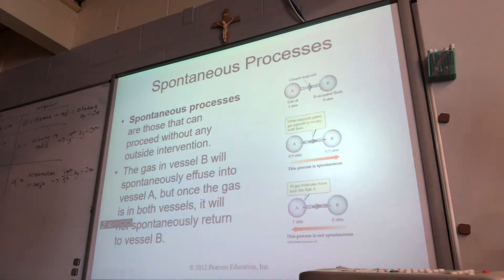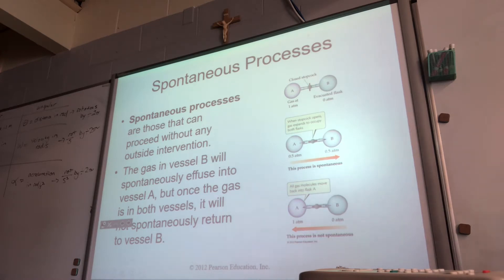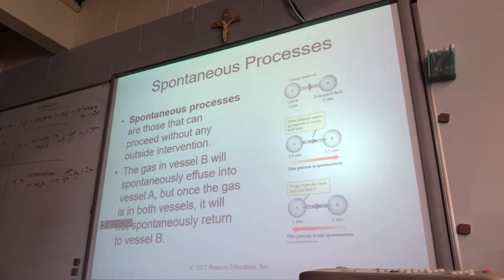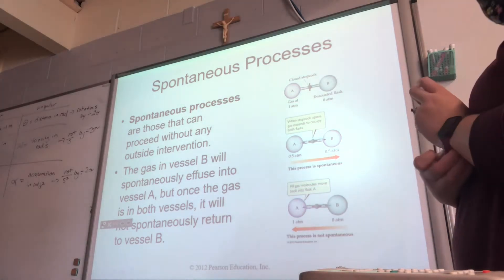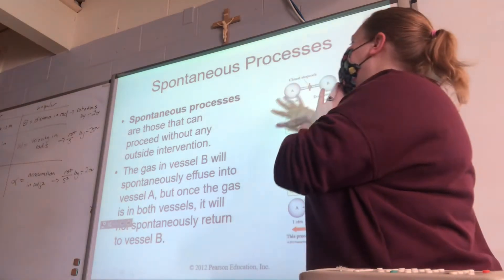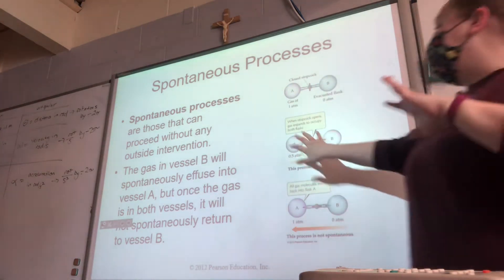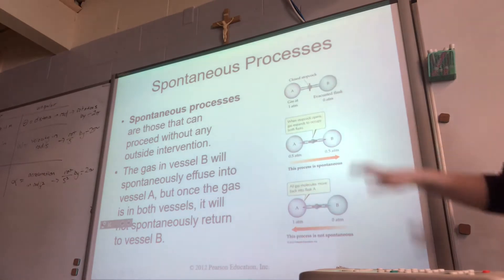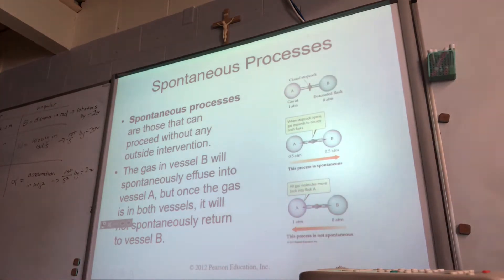From there, we want to talk about spontaneous processes—ones that don't need us to do anything in order to get them to happen. We don't have to add heat, stir, agitate, or put any pressure on the system. That's what we refer to as a spontaneous process: something that occurs without our input altogether. In this example, we have a flask with nothing in it and a flask with gas. Once we remove the barrier between the two, the gas moves from one side to the other—that's a spontaneous process.